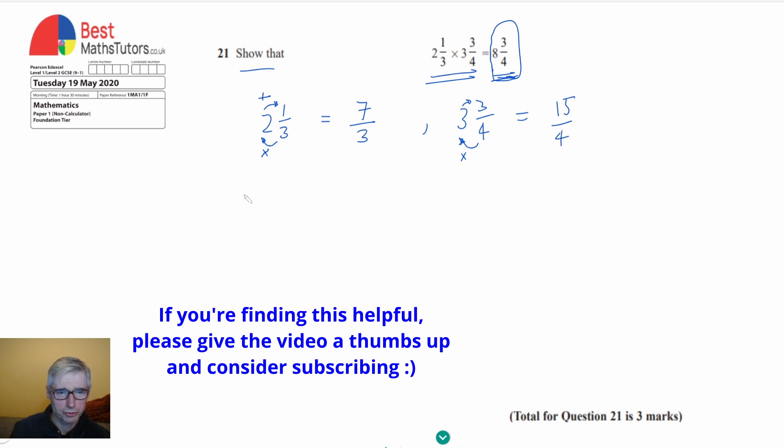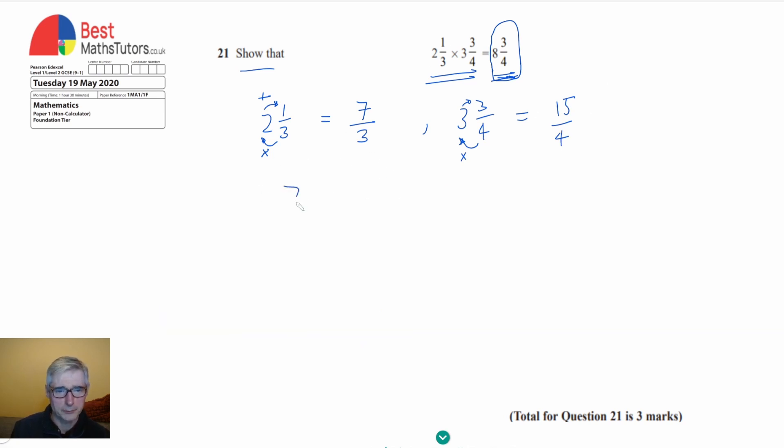So now I'm going to try and do that calculation. I'm going to times 7 over 3 by 15 over 4. And first of all what I can do is anything on the top line will cancel with anything on the bottom line.